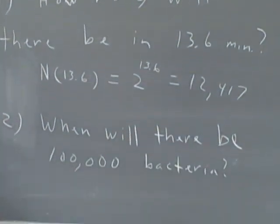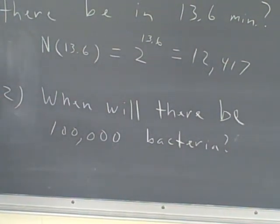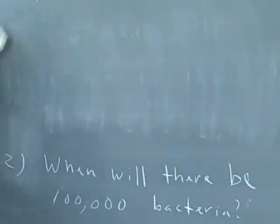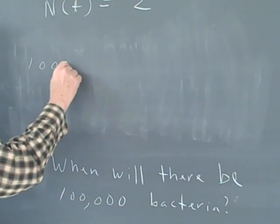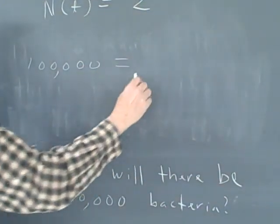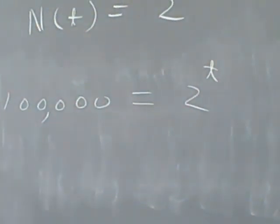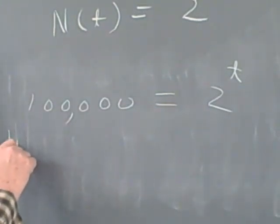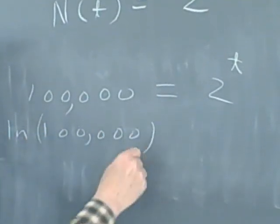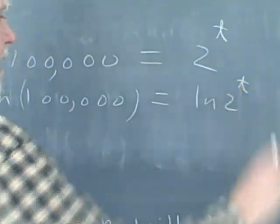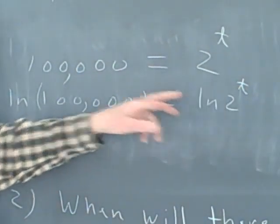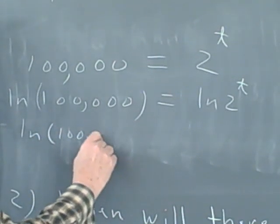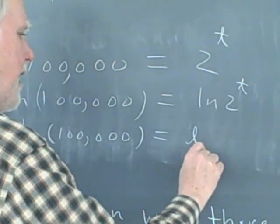The next question is: when will there be 100,000 bacteria? When will this culture grow from one to 100,000? We set 100,000 = 2^t and want to know what time that is. This is an exponential equation, and the way we solve it is to take the log of both sides: log(100,000) = log(2^t). We use the logarithmic property to bring the exponent t out front: log(100,000) = t × log(2).